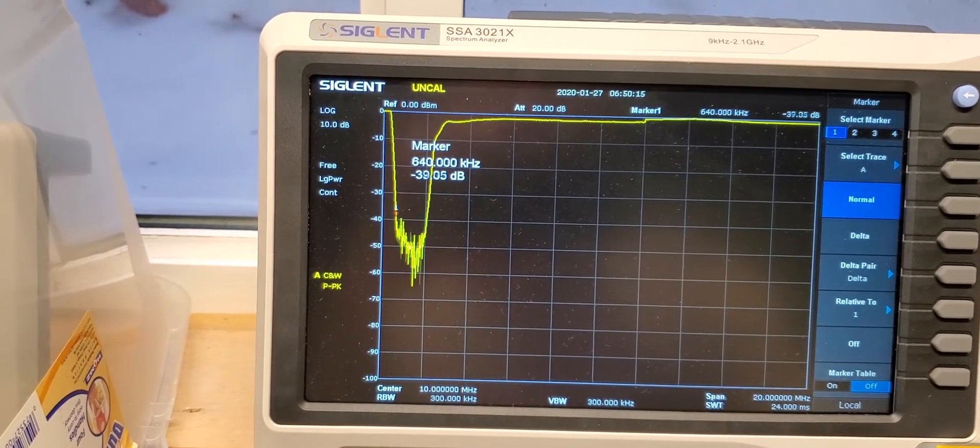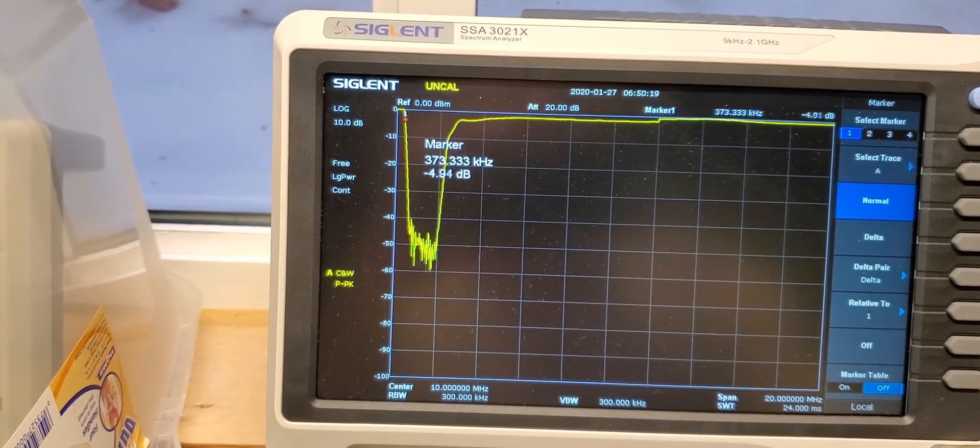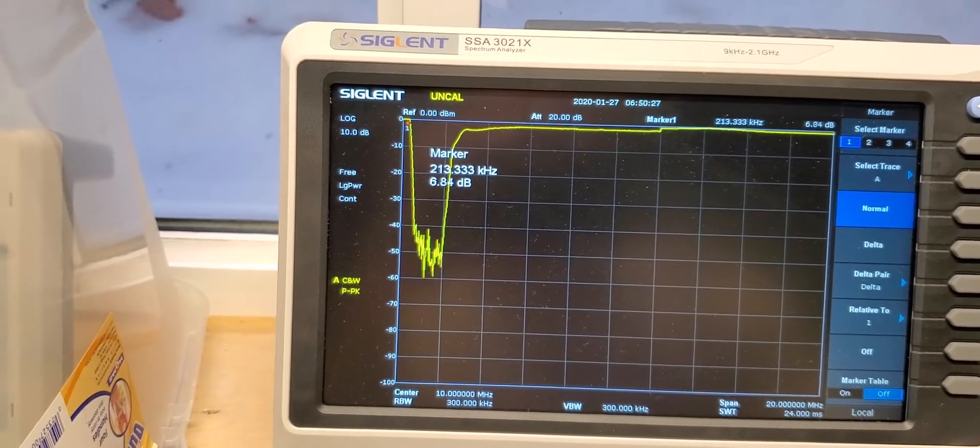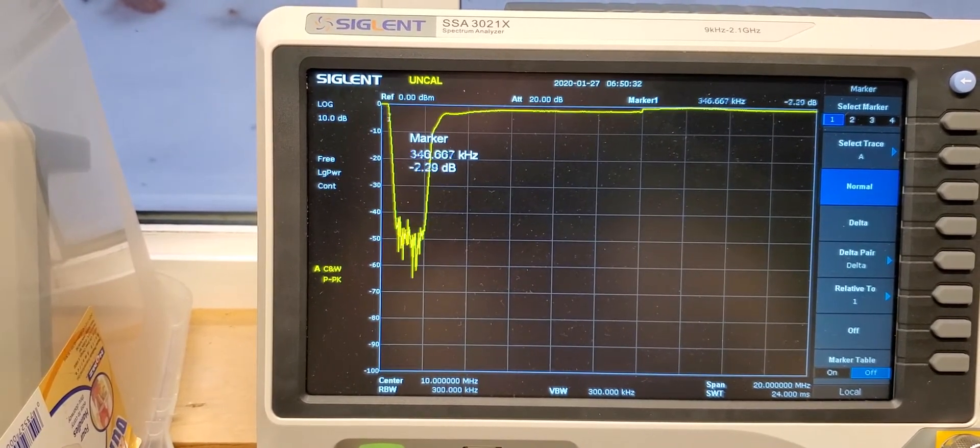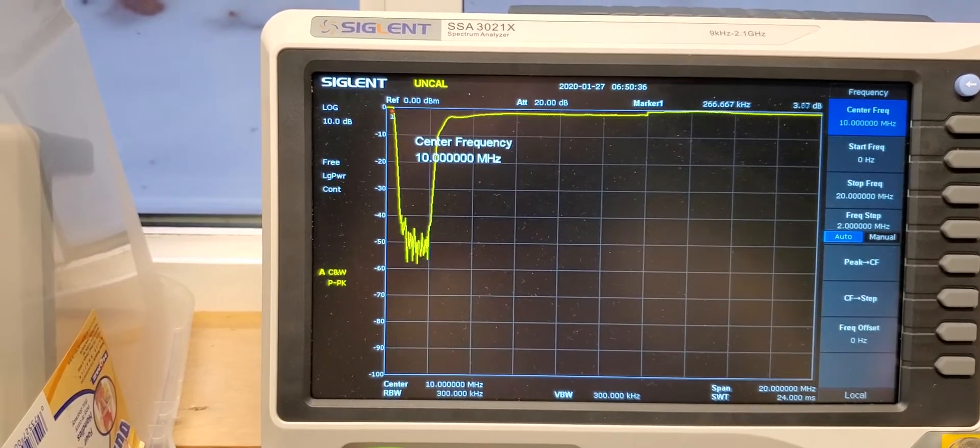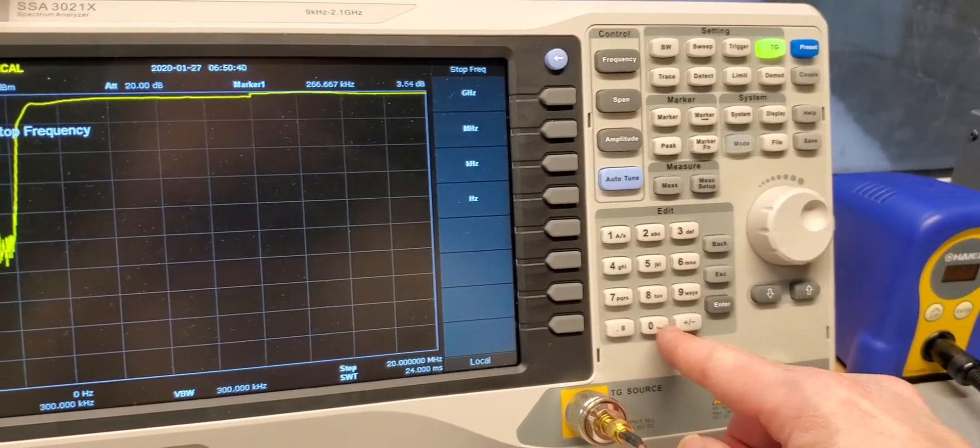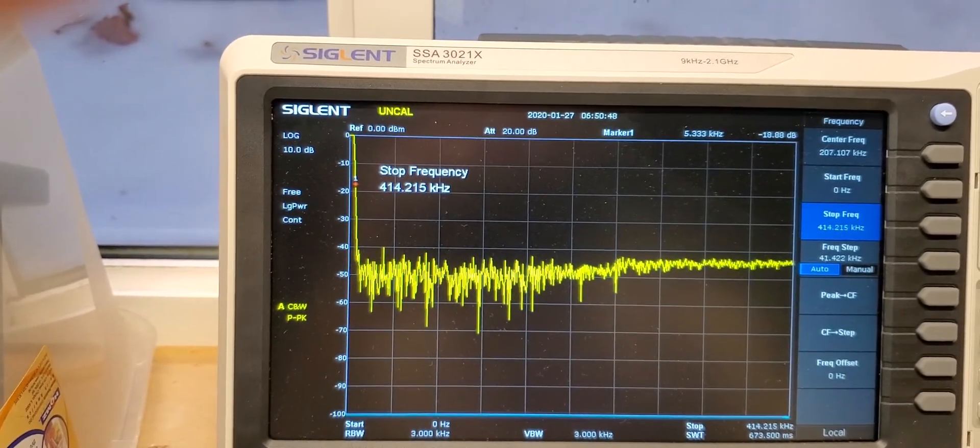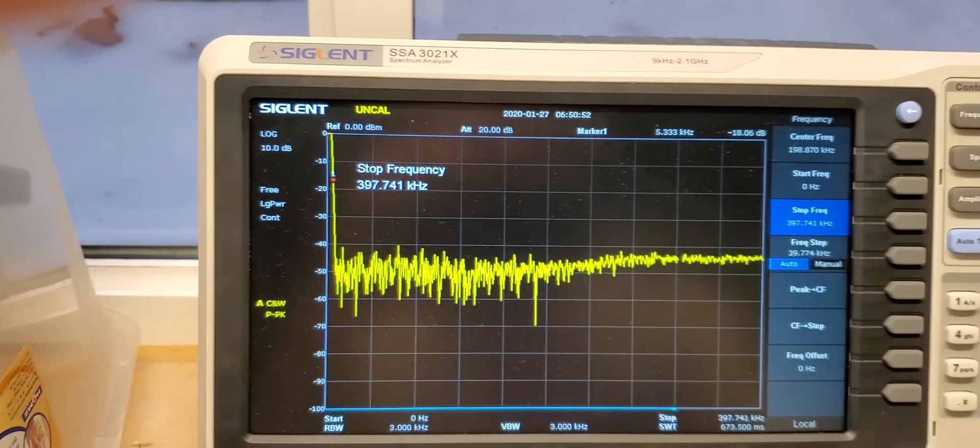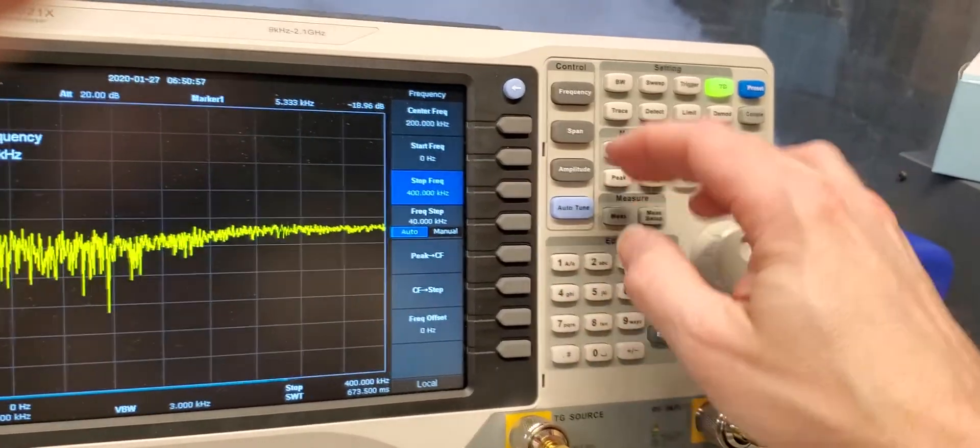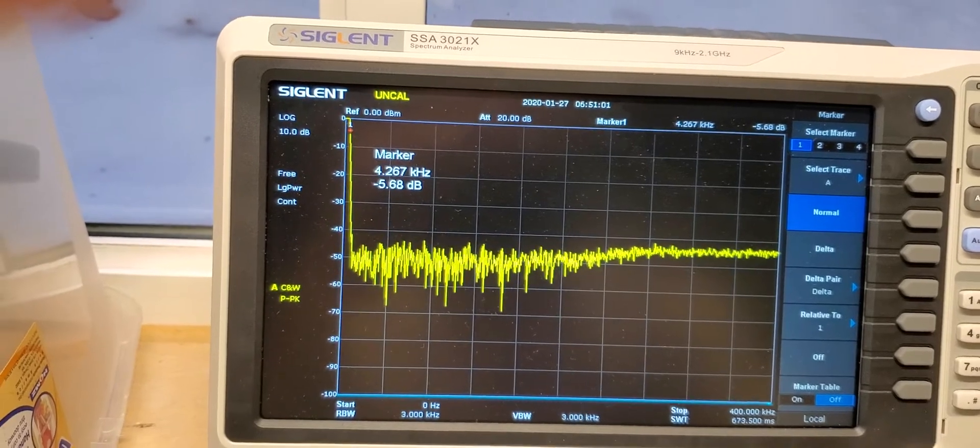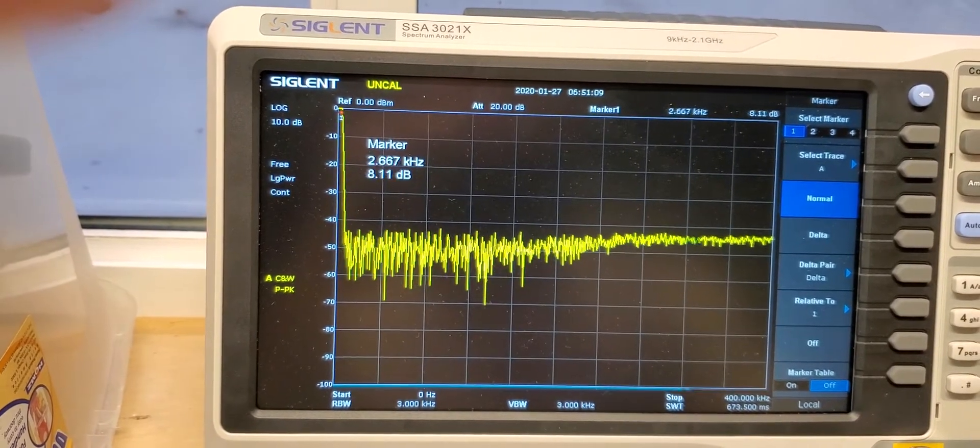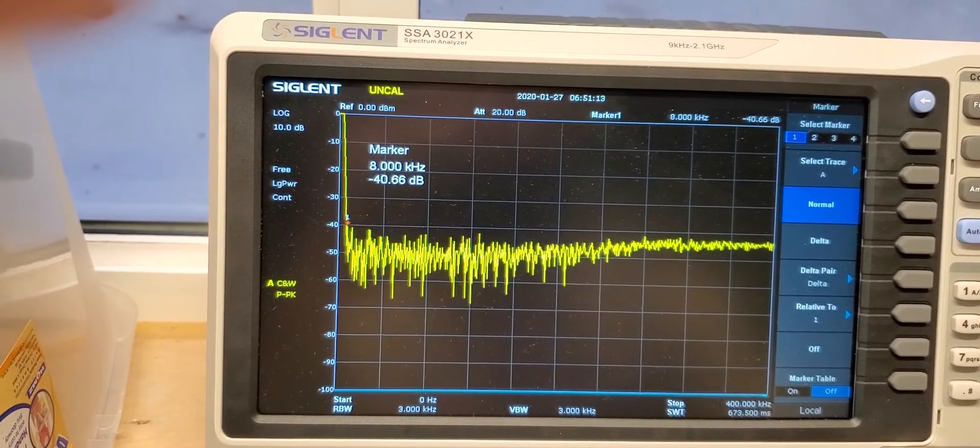Then if we continue on, up around 400 kilohertz it lets again some of the signal through. So if you want to look at that closer you can zoom in. So if you type in 400 kilohertz stop frequency, and right here we can see it's not actually 400 kilohertz but it stops. It's definitely good all the way to 8 kilohertz.